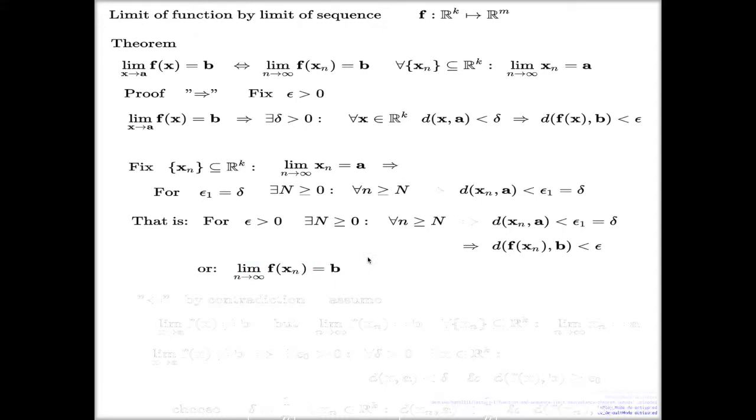And that's the forward proof. I chose any possible sequence with this condition, and I concluded that for this sequence, newly built sequence f of xn, satisfies this condition. That's the end of the forward proof.